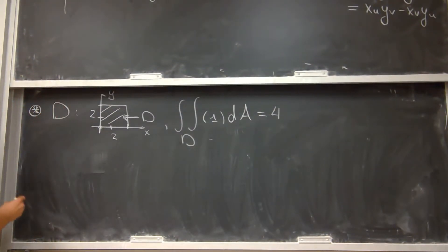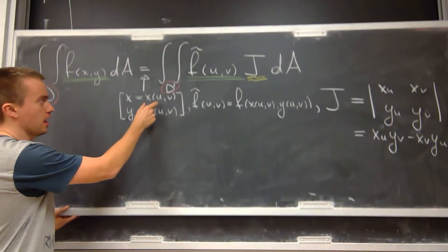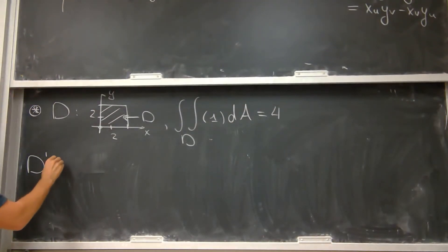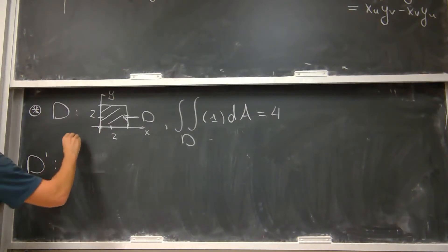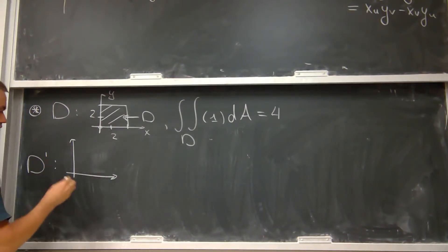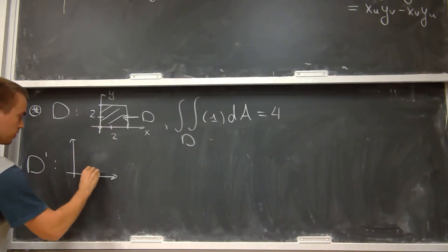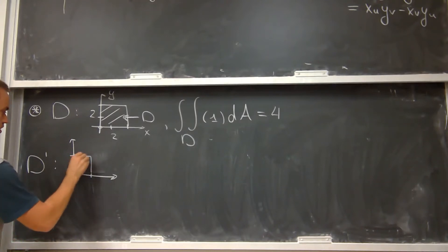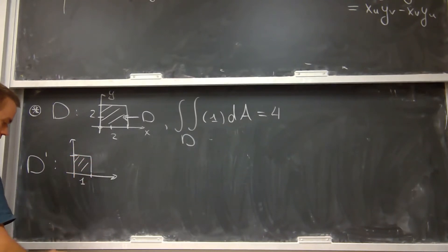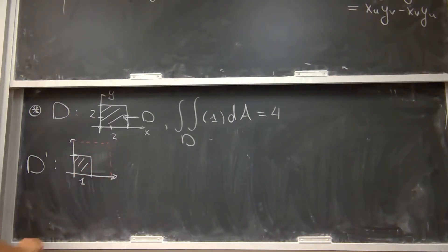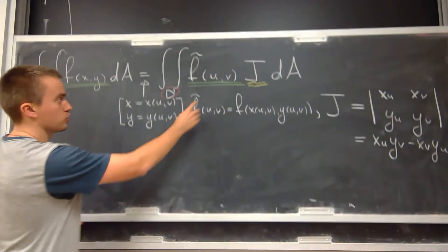I'm going to do something a bit unusual. Instead of being given a transformation, I'm going to make one. I will define a new region D-prime which is going to be a square where the side length is equal to 1. So D-prime is just a square of side length 1. To get this from the original square, I simply decrease the square by a factor of 2.